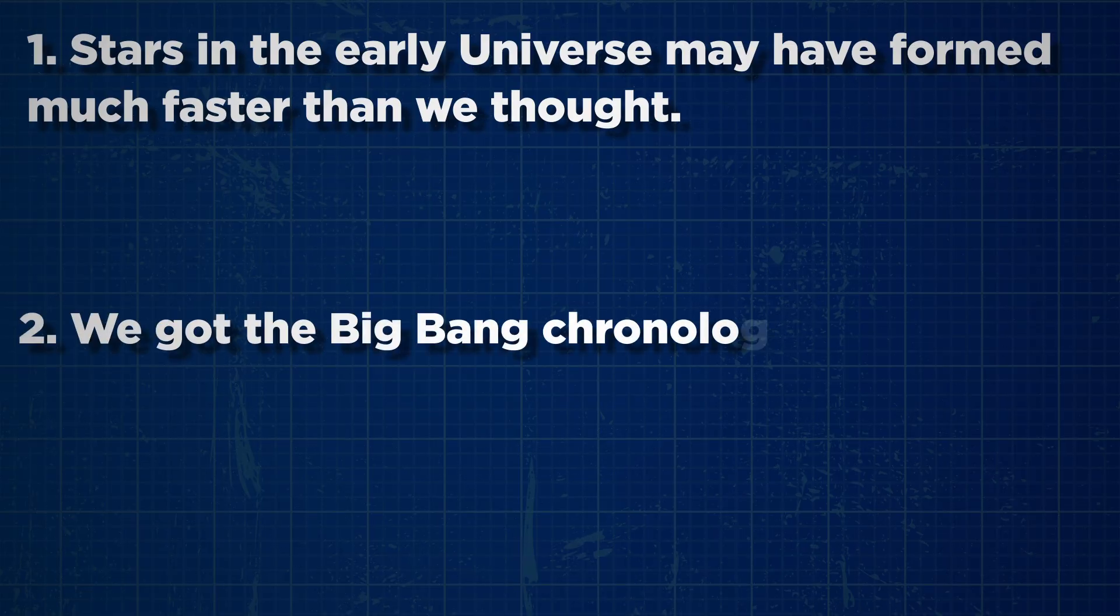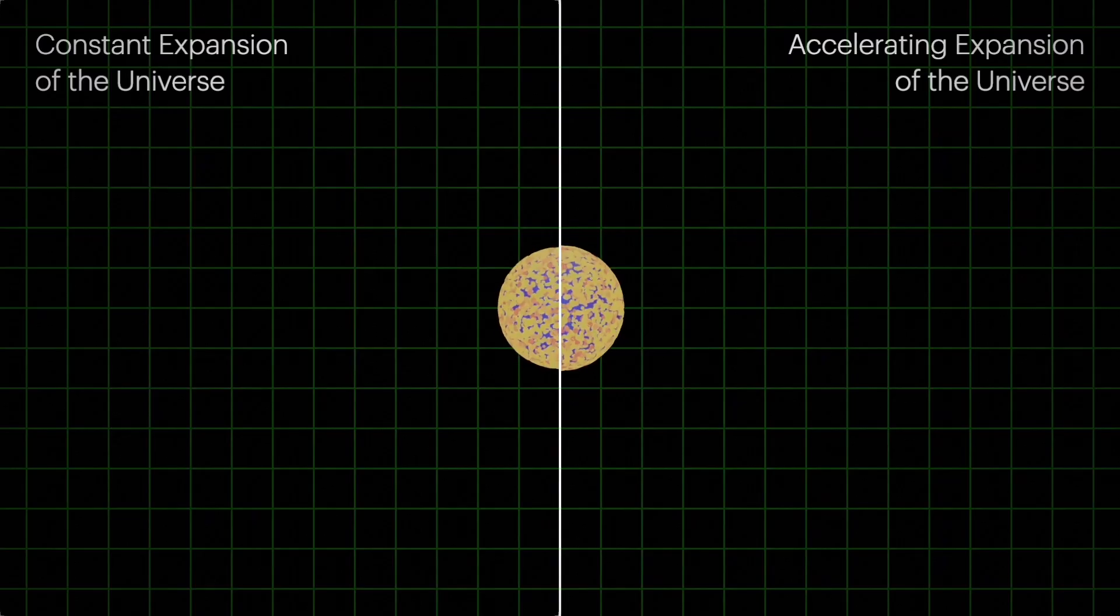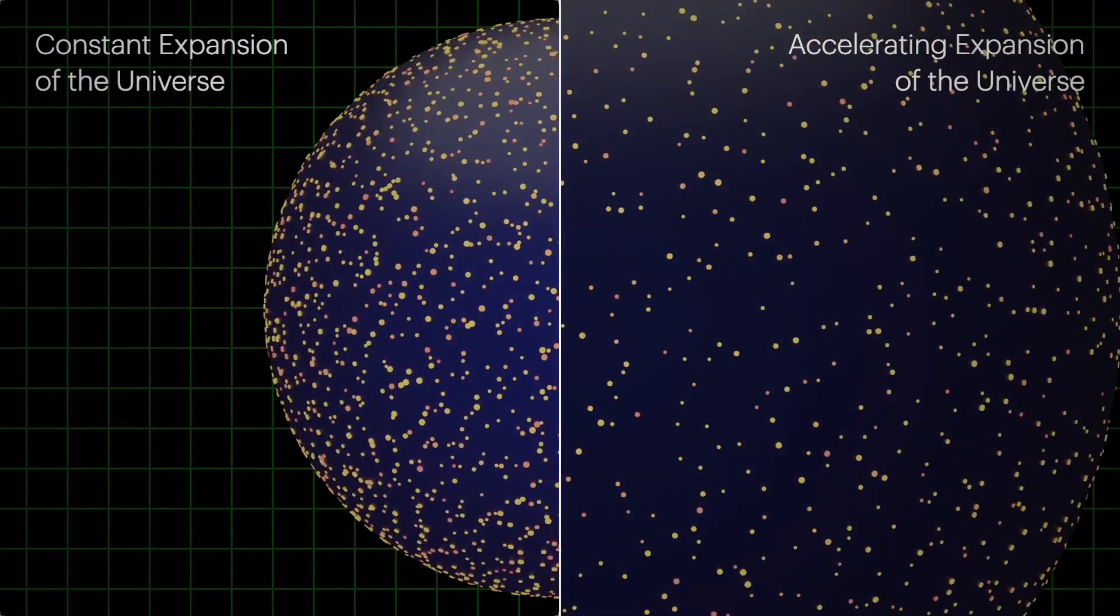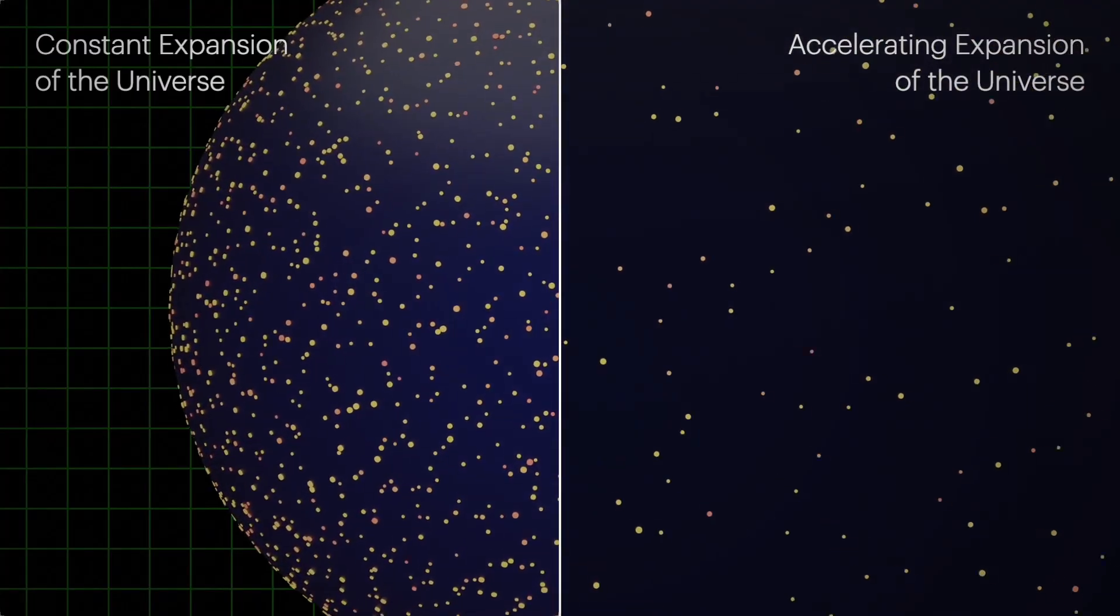Two, we got the Big Bang chronology wrong. If the expansion rate of the universe was different, or if we're misunderstanding inflation, then these galaxies could have arisen later than we think.